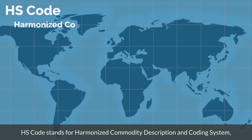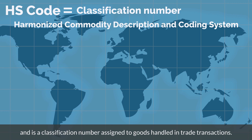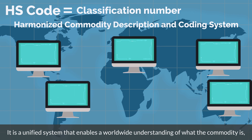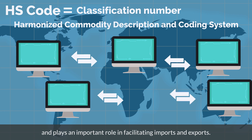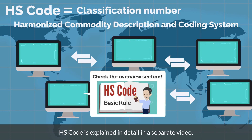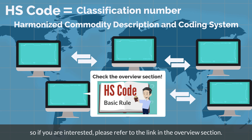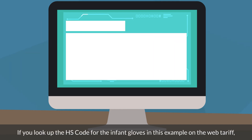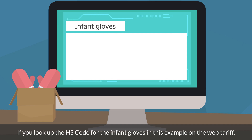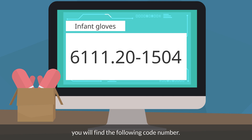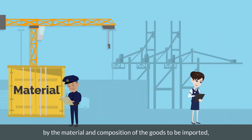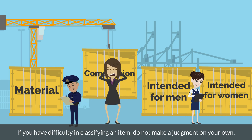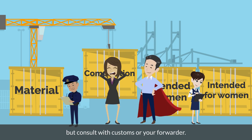HS code stands for Harmonized Commodity Description and Coding System, and is a classification number assigned to goods handled in trade transactions. It is a unified system that enables a worldwide understanding of what the commodity is, and plays an important role in facilitating imports and exports. HS code is explained in detail in a separate video linked in the overview section. In order to import goods, look up the HS code and applicable tariff rate in advance. The classification number is determined by the material and composition of the goods, whether they are intended for men or women, and other factors. If you have difficulty classifying an item, do not make a judgment on your own, but consult with customs or your forwarder.